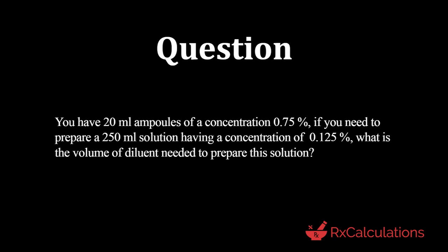But let's get right to the question. The question says: you have 20 milliliter ampoules of a concentration 0.75%. If you need to prepare a 250 milliliter solution having a concentration of 0.125%, what is the volume of diluent needed to prepare the solution?